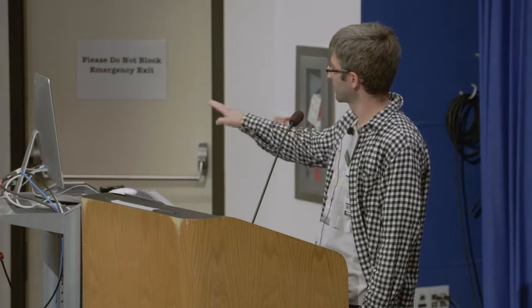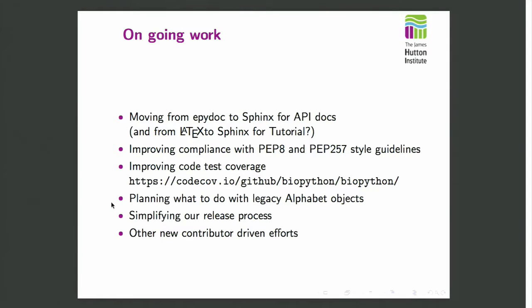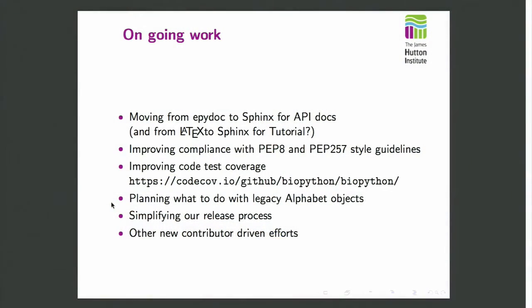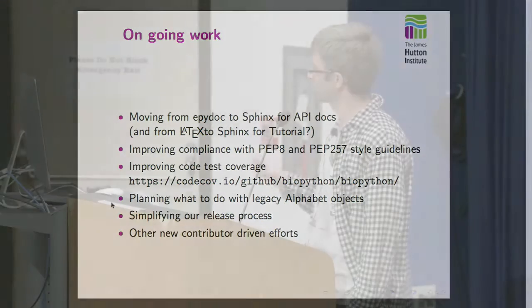Improving code coverage: there are platforms that link into the GitHub ecosystem where you run your tests and collect metrics about which lines have been tested. If you go to that URL, you'll see we're at about 85% code coverage, excluding tests that need a command line tool or an online resource. We have a somewhat overly engineered system for labeling the alphabet that a sequence is using — is it DNA, ambiguous DNA, protein, extended protein? No one in the current project is really happy with how that works, so we're looking at that. Another goal is simplifying our release process. At the moment it's still a fiddly day of running scripts, running epydoc, doing uploads, and so on. In the main, our improvements and new features are user-driven — contributions from the community at large.